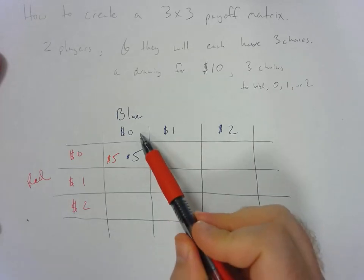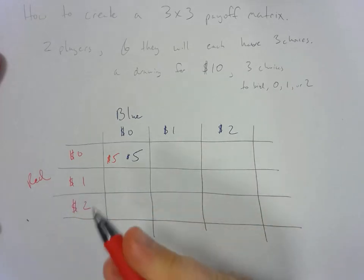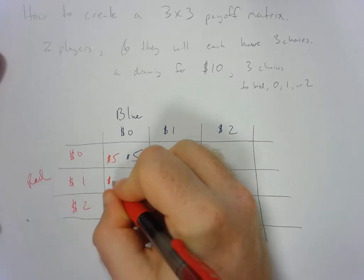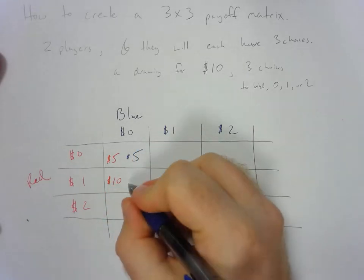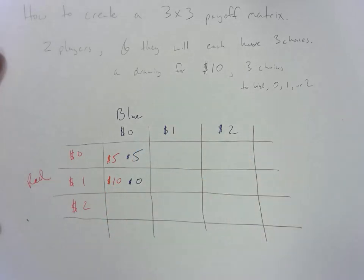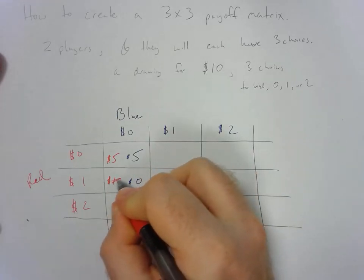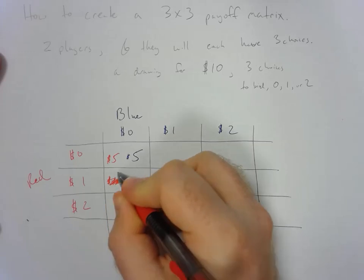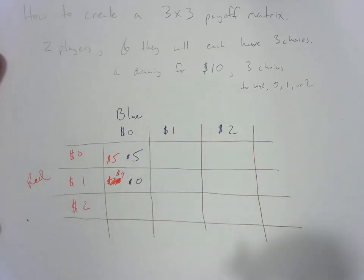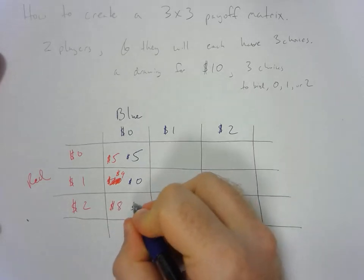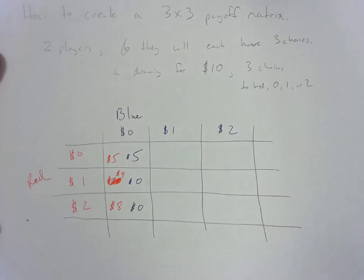Now imagine that blue bid zero and red bids one. Well that means red is going to win so they get 10 and blue gets zero. Actually it means red gets 10 minus 1 or $9. Now what happens if red bids 2? They're going to win and get $8 and blue is going to lose and get zero.